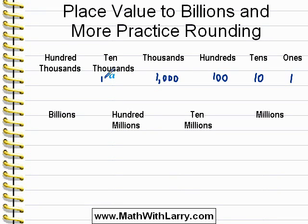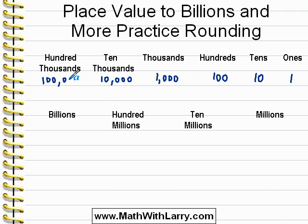Ten thousands are five-digit numbers that look like that, and hundred thousands are six-digit numbers. As we move to the left, each place value is ten times as big as the one on the right.